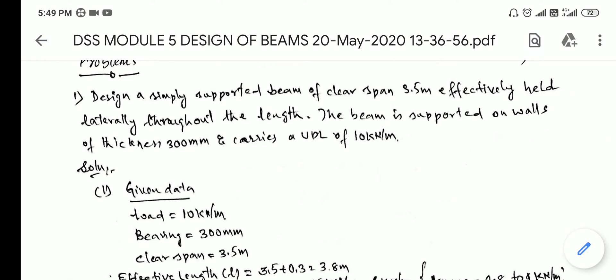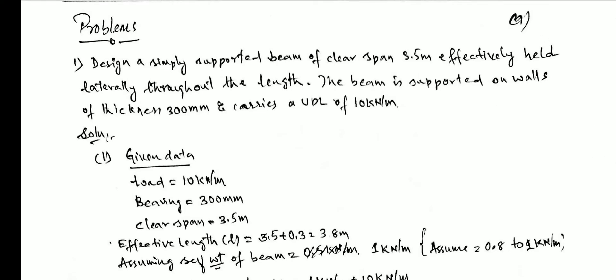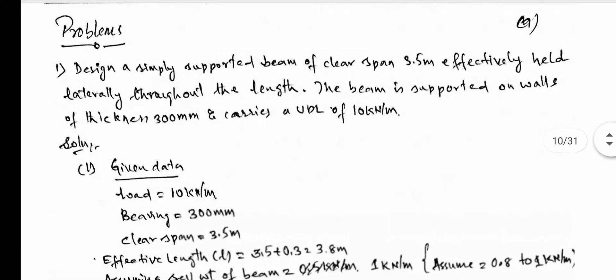Today we will start the design of a laterally supported beam. I will solve one problem and show all the steps one by step. We already discussed the design steps in videos three and four, so if you watched those videos you can easily understand this. Now, the problem: design a simply supported beam of clear span 3.5 meters, effectively held laterally throughout the length, supported on walls of thickness 300 mm, carrying a UDL of 10 kN/m.